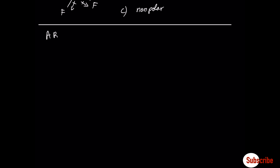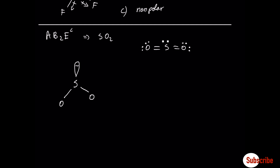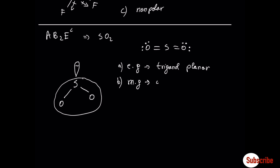Let's move now to an example that has a lone pair. E stands for a lone pair on the central atom. A typical one is sulfur dioxide. According to VSEPR theory, sulfur dioxide is going to have a three-dimensional shape where, in terms of electronic geometry, it is trigonal planar. But the molecular geometry takes into consideration only the atoms, so it's going to be angular, less than 120 degrees. This is due to the lone pair that takes more space than the bonding pairs. The molecule is polar.